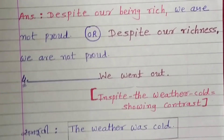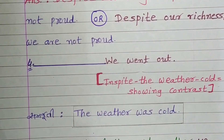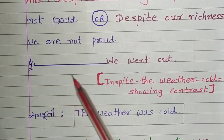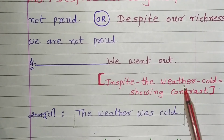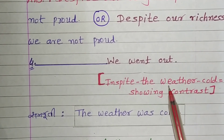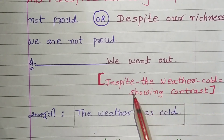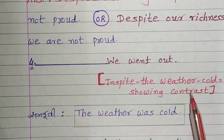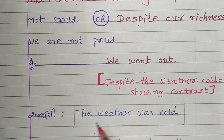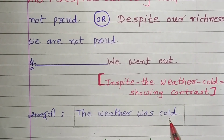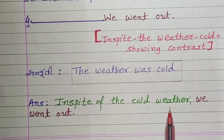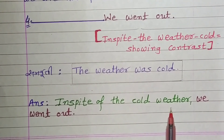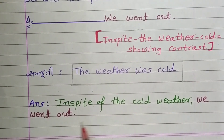Example number 4: 'We went out.' Bracket: in spite of, the weather, cold. The weather was cold. Answer: 'In spite of the cold weather, we went out.'